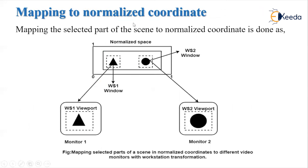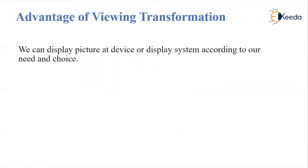Now, how to map it to the normalized coordinate? Suppose there are two monitors — monitor 1 and monitor 2. The mapping method places parts of the scene in a normalized coordinate for two different video monitors with workstation information. We consider the viewport of both workstations in a single normalized space where both are placed together. The advantage of viewing transformation is that we can display the picture on a device or display system according to our need and choice — whatever part of the scene we want to display, we can display it with the help of viewing transformation, choosing which part of the scene to show on which part of the display device.